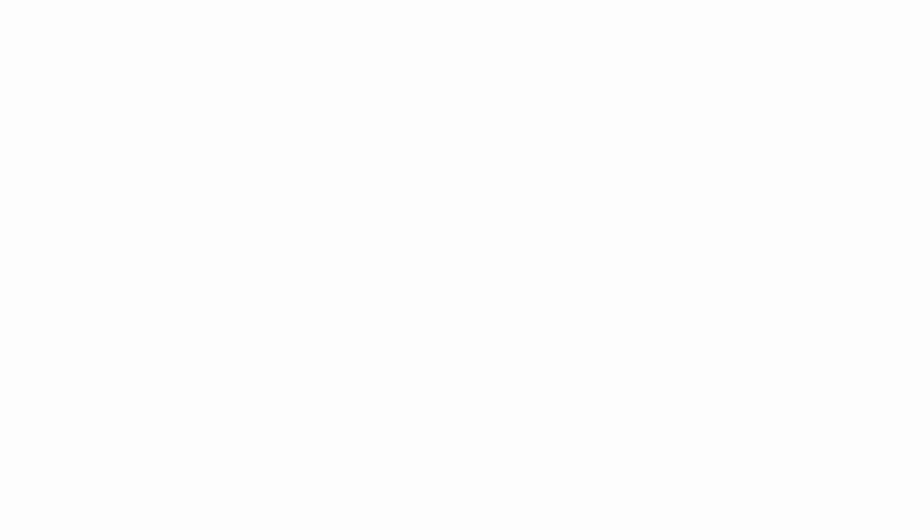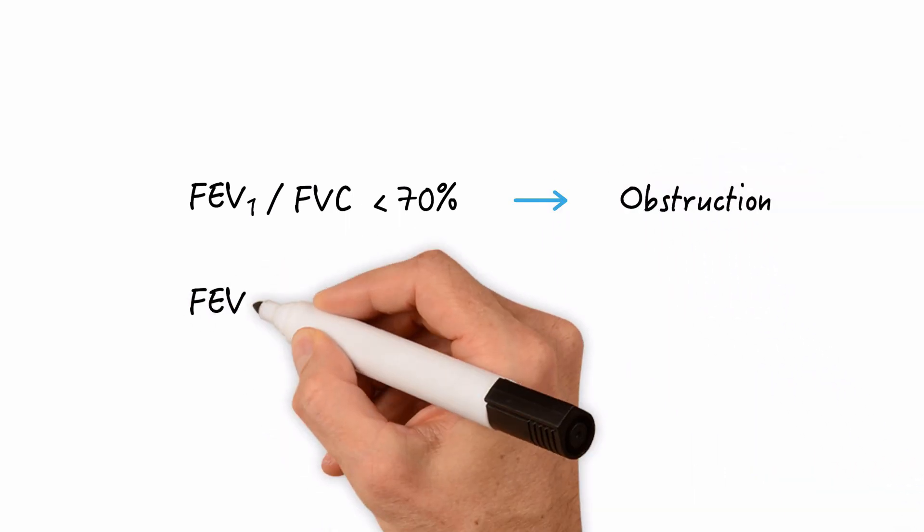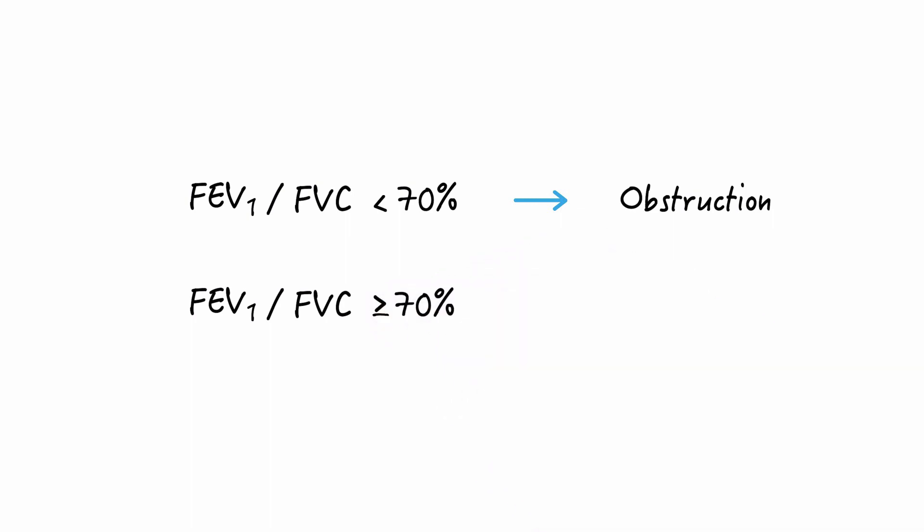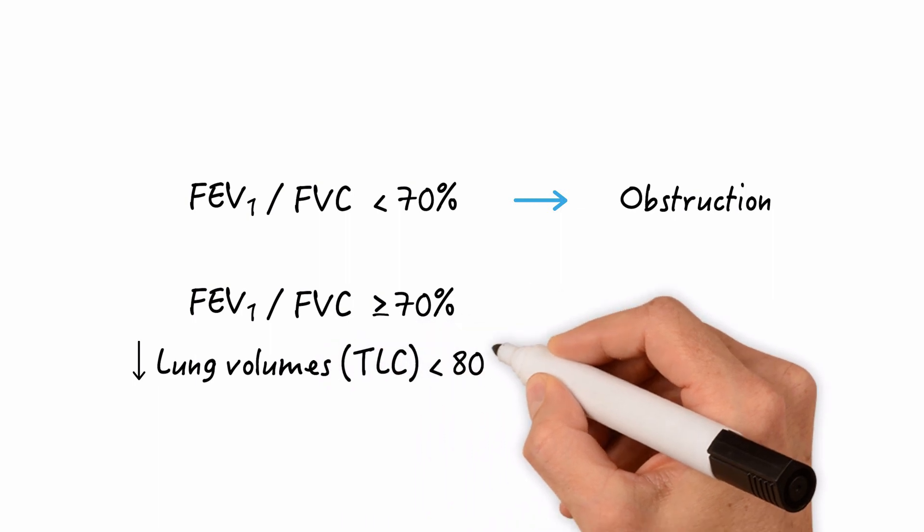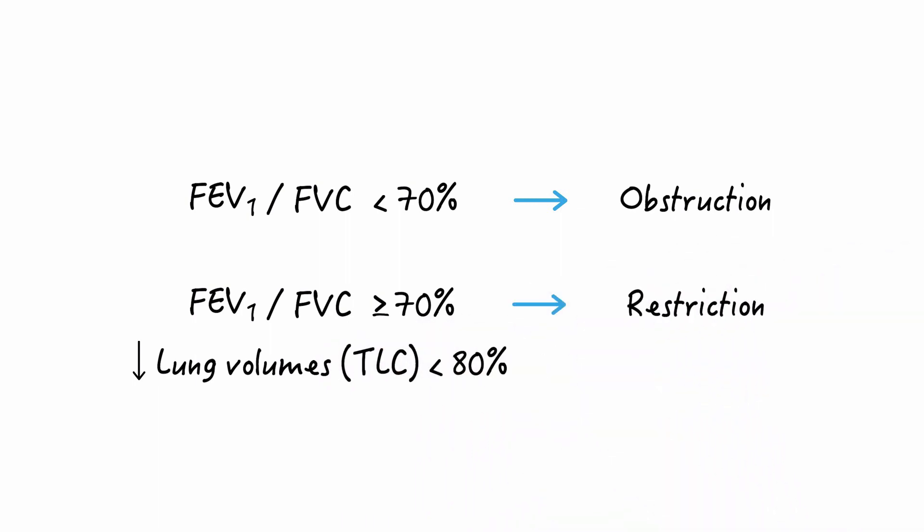Using the traditional method, the following rules are generally applied. An FEV1 over FVC of less than 70% implies airway obstruction. An FEV1 over FVC of 70% or greater, along with reduced lung volumes, especially TLC to less than 80% predicted, indicates restriction.